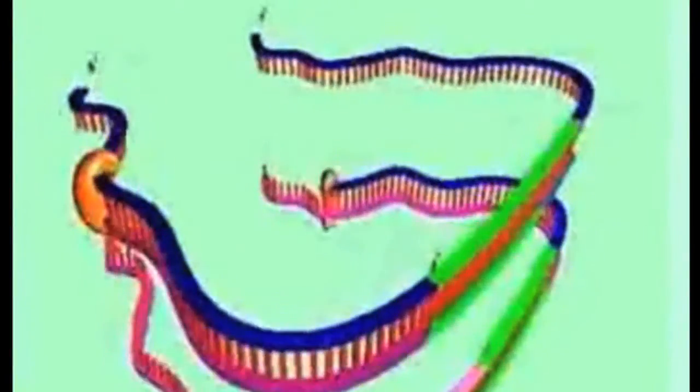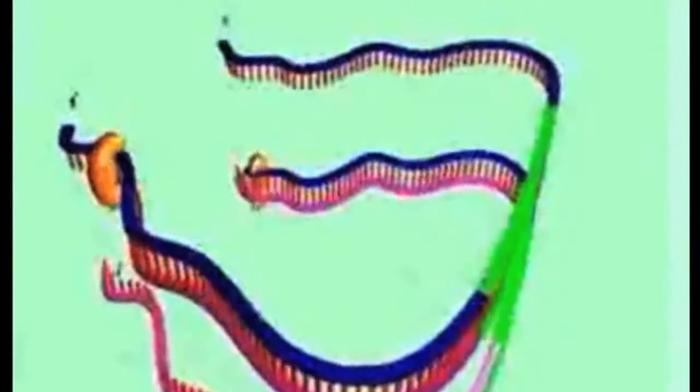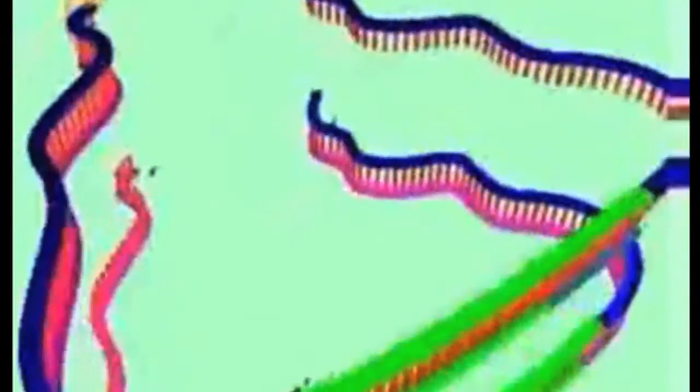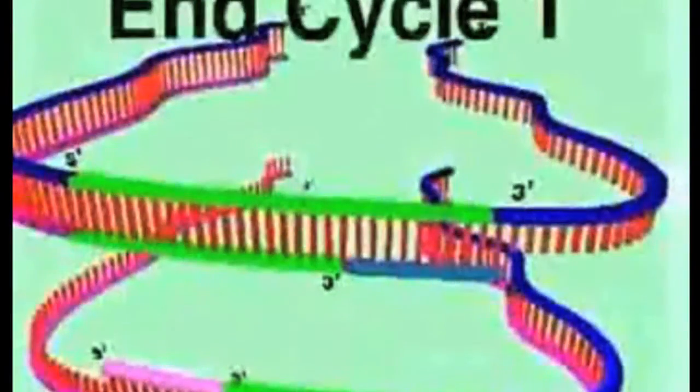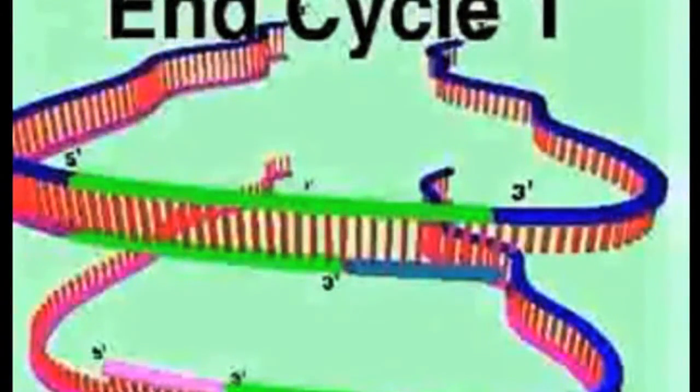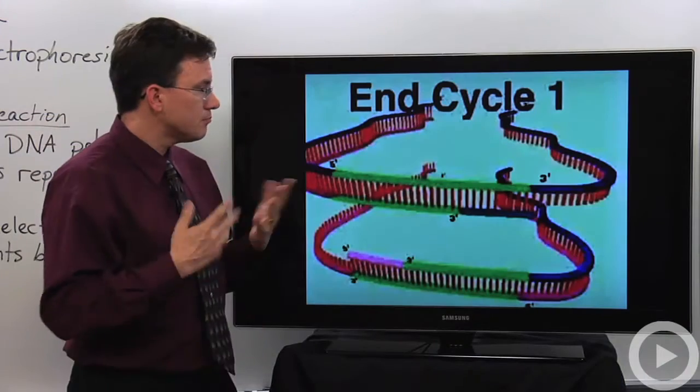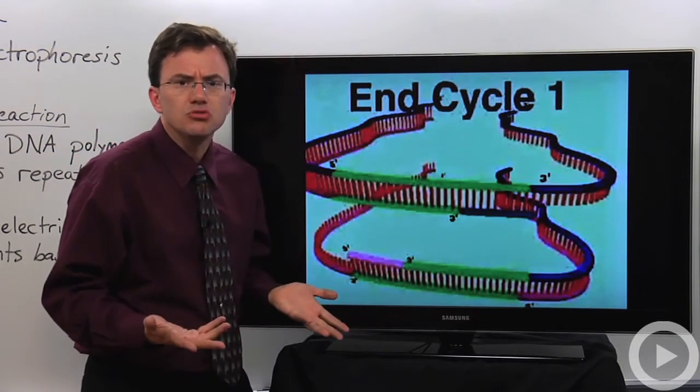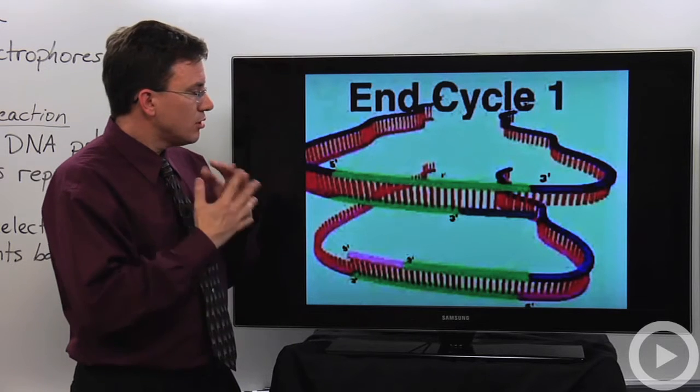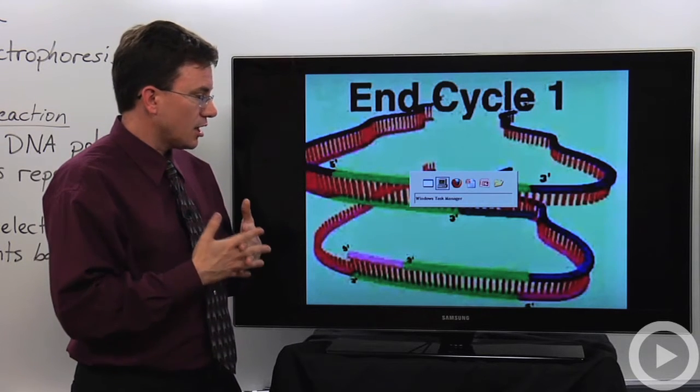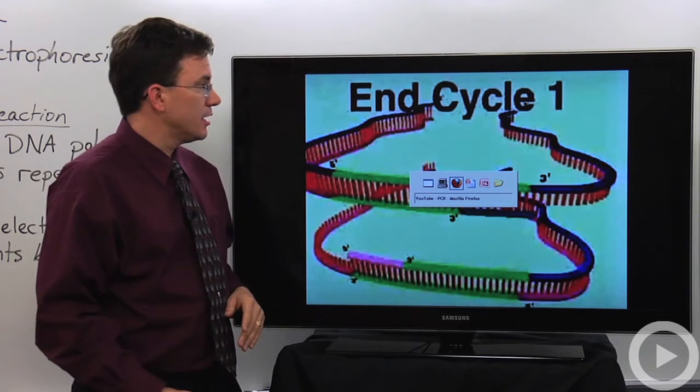And if you give it enough time, it'll finish copying the entire molecule going this way, and that one will copy it going that way. Remember, the two strands of DNA are anti-parallel. They go in opposite directions. But we only give it maybe two minutes at most. And so at that point, we then let it stop, and we're at the end of cycle one.